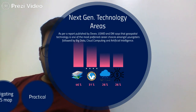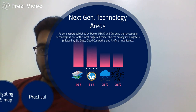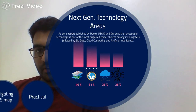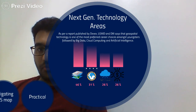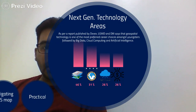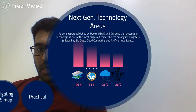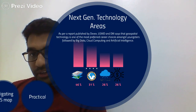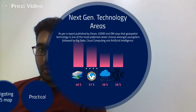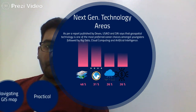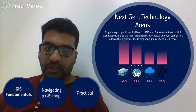According to a recent report, geospatial technology is one of the most preferred career choices amongst youngsters — it's first at around 46 percent, followed by big data at 31 percent, cloud computing at 26 percent, and then artificial intelligence. So it is one of the interesting careers in next generation technologies.